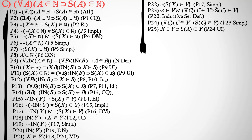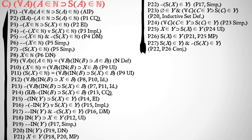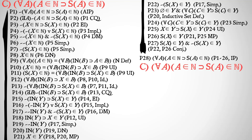We universally instantiate C to X, and then by modus ponens on premises 21 and 25, the successor of X is a member of Y — because we had X as a member of Y and we know Y is inductive. So we have: the successor of X is a member of Y, and also it's not the case that the successor of X is a member of Y — premises 22 and 26, conjunction. We now have a contradiction, so we pull out of our indirect proof to get premise 28: for all A, A is a member of N implies the successor of A is a member of N. Premises 1 through 26, indirect proof. And that is the second Peano postulate.